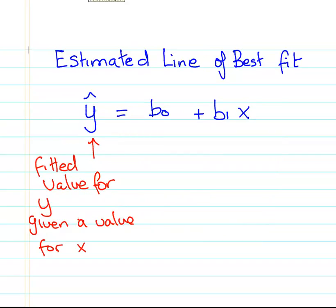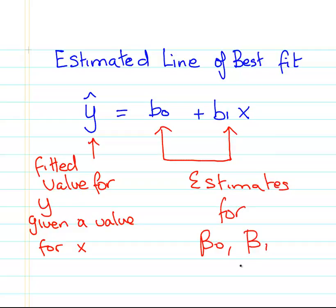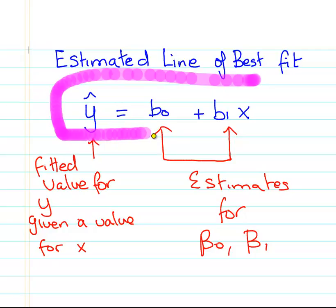So essentially what I need is the true intercept and the true slope. What we are going to do here is come up with estimates for those values. These are estimates for beta 0 and beta 1. This is what we are trying to come up with here. This is the end result should have this form: Y hat equals B0 plus B1 X.